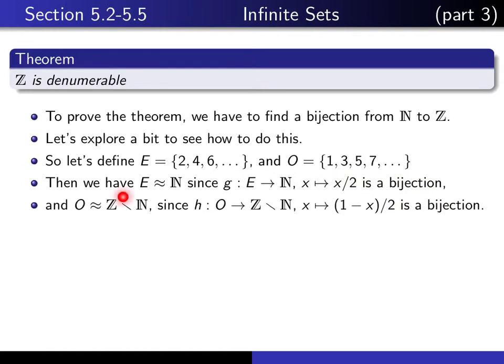If we let O denote the set of odd natural numbers, then O has the same cardinality as Z minus N, because this function, x goes to 1 minus x over 2, is also a bijection. That seems to be what we would conjecture from our calculations on the previous slide.